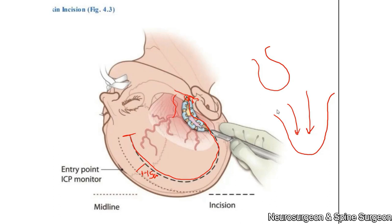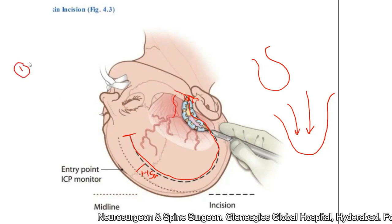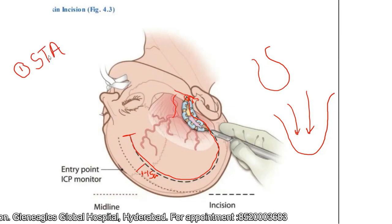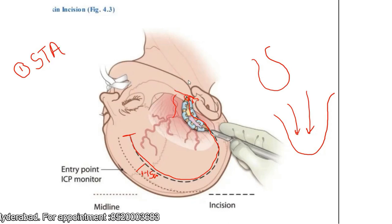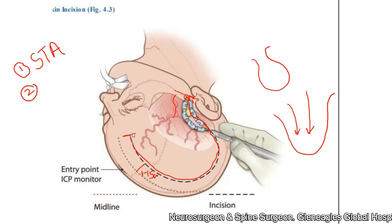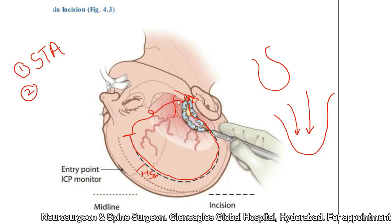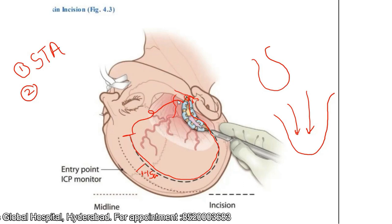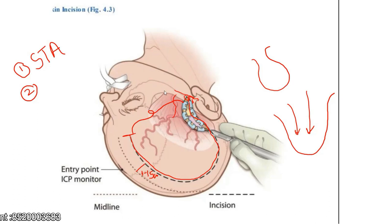To ensure the vascularity of the flap, we take two or three precautions. First, we try to preserve the superficial temporal artery, achieved by palpating it in front of the tragus. Second, we ensure that the base of the flap — that is, the width — is as wide as possible. Once the incision is developed, hemostasis is achieved.